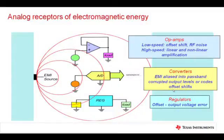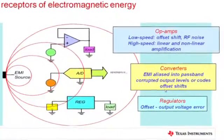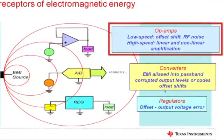The effect on our analog circuits is varied. Most common, though, with our low-speed operational amplifiers, this involves an offset shift. An op amp has an inherent offset, and when EMI is present, if the circuit is sensitive to it, we'll see that the offset moves in value. There may also be some RF noise coupling to the output of the amplifier, which may be very small due to coupling across the integrated circuit die.